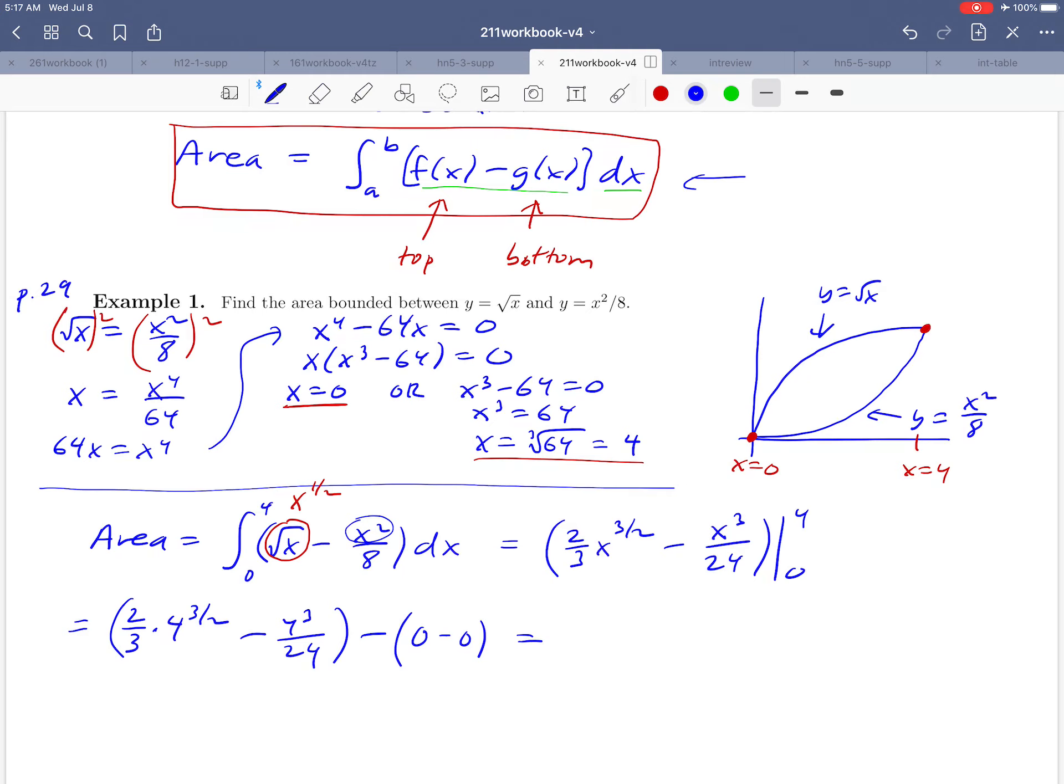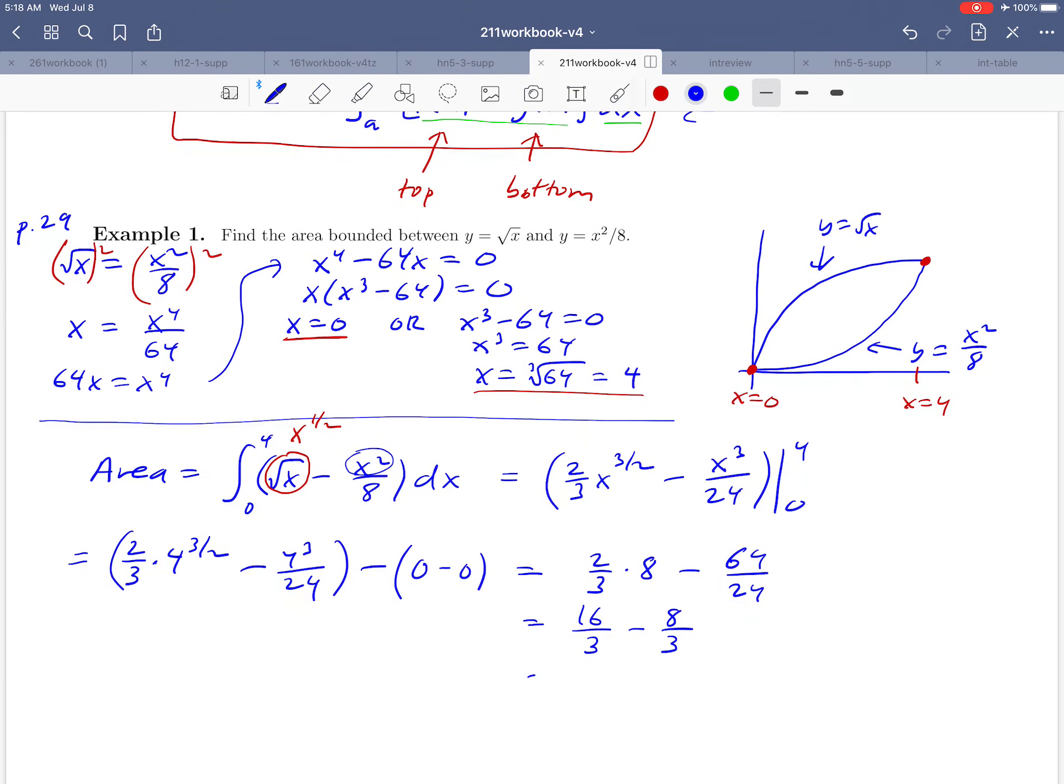And the rest is just calculating this and seeing what we end up with here. So let's see, we're going to get 2 thirds, and then 4 to the 3 halves, that ends up being 8. And then 4 cubed over 24, let's see, that's going to be 64 over 24. So, 2 thirds times 8 is 16 thirds minus, then if we reduce 64 twenty fourths, that's going to be 8 thirds. And then finally 16 thirds minus 8 thirds is just going to give us 8 thirds. There's our answer, and that is the area between these two curves.